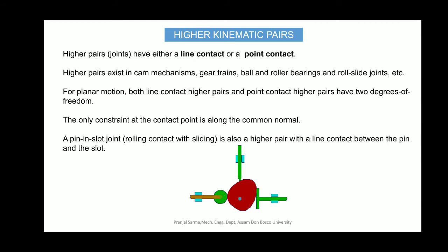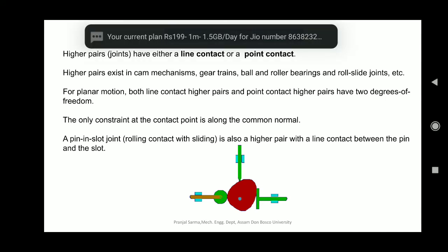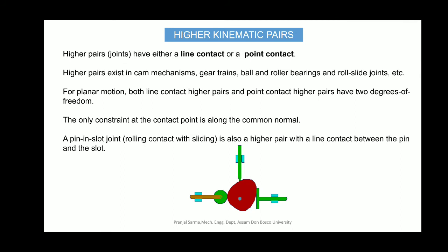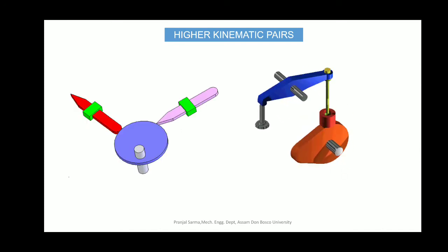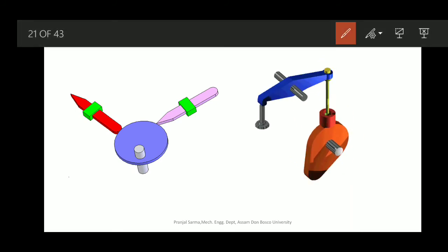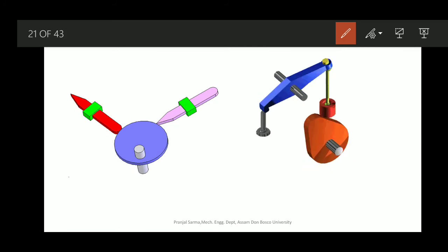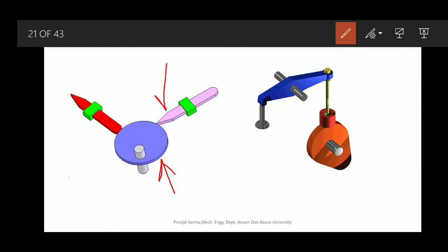Similarly we have higher kinematic pairs, which have either line contact or point contact. Examples include gears, ball and roller bearings, and cam mechanisms. In those cases the pair elements have only point contact or line contact. For planar motion, both line-contact and point-contact higher pairs have two degrees of freedom. A pin-in-slot joint or rolling contact is also a higher pair — with line contact between the pin and the slot.